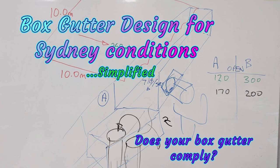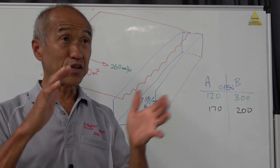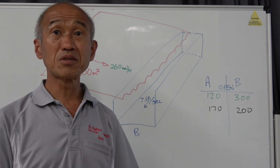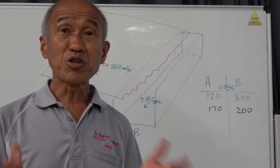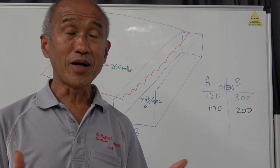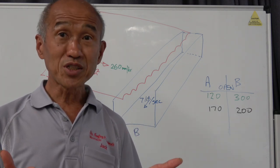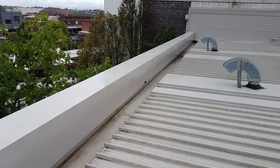We're talking about box gutters, and box gutters seem to be a feature of a lot of modern roofs nowadays. So with box gutters, people often ask me should I have a box gutter and if so, how should it be designed?